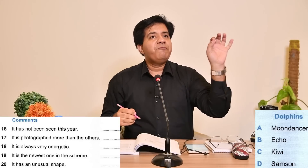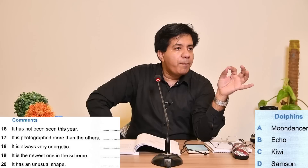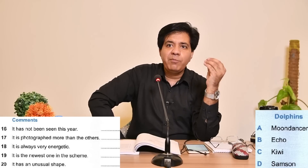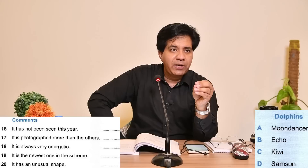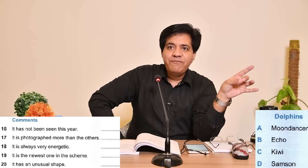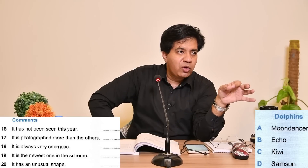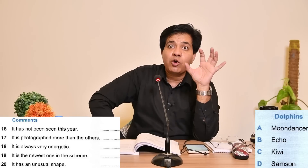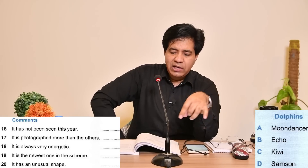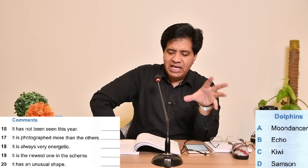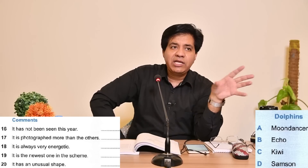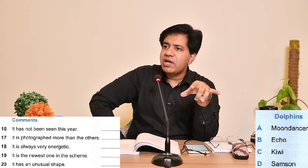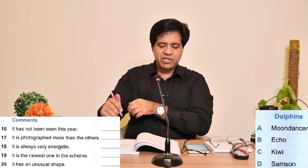Now listen: whenever they give you any proper nouns — name of a movie, name of books, name of people — don't read them, whether they are in the questions or in the options. You just have to read the comments. Over here, dolphin names A, B, C, D — you don't need to read them. They will talk about them one by one. All you need to read is the question itself.